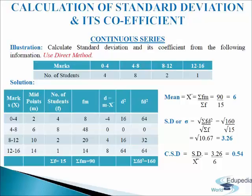In the second column we will write midpoints, that is m. The midpoints of the class intervals are 2, 6, 10, and 14. Then we will write down number of students, denoted by letter f (frequencies): 4, 8, 2, 1. We will add up the frequencies and we will get sigma f equals to 15.